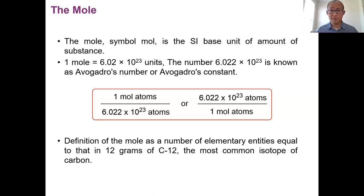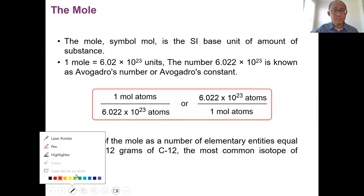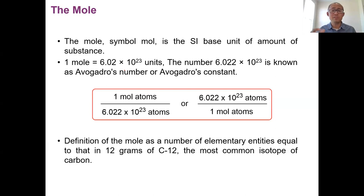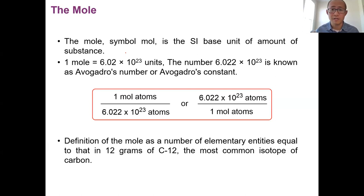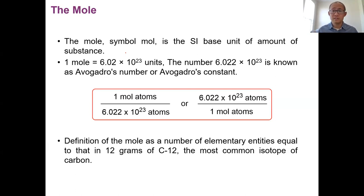One mole is a big number: 6.02 times 10 to the 23rd. This number is used in scientific notation and can describe everything. One mole of an atom is 6.02 times 10 to the 23rd atoms. One mole of a molecule is 6.02 times 10 to the 23rd molecules. We call this Avogadro's number. One mole of anything is that many of anything, just like one dozen of anything is 12 of anything.